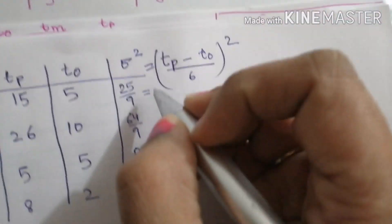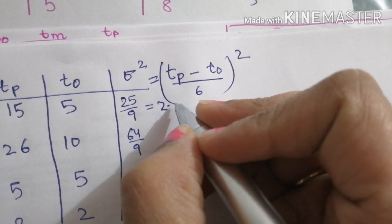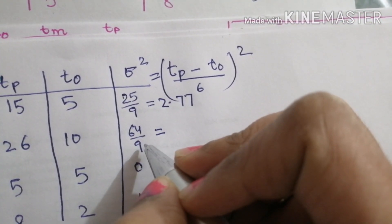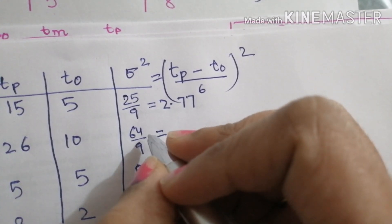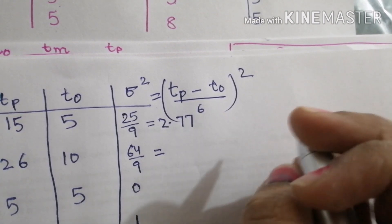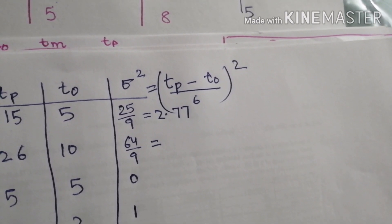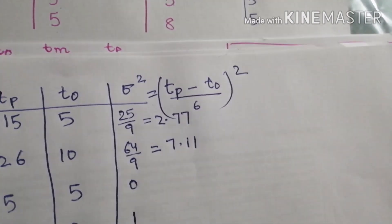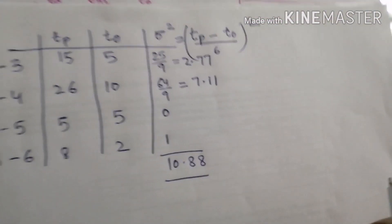Calculating variance using (Tp minus T0)/6 whole squared: for 1-3, (15-5)/6 = 10/6 = 5/3, squared gives 25/9 ≈ 2.78. For 3-4, (26-10)/6 = 16/6 = 8/3, squared gives 64/9 ≈ 7.11. For 4-5, (5-5)/6 = 0, variance is 0. For 5-6, (8-2)/6 = 1, variance is 1. The total sigma squared for the critical path is approximately 2.78 + 7.11 + 0 + 1 = 10.88.